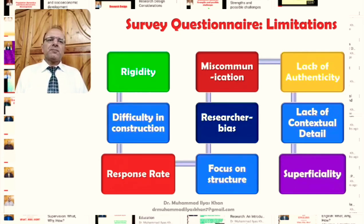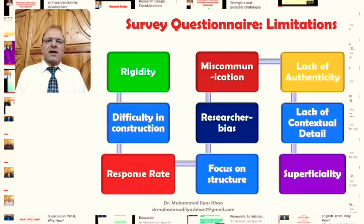Researcher bias is another limitation because the researcher is asking what they want to explore in the way they want to explore it. The choice that respondents have is limited — they generally have to respond in terms of the items provided, especially in closed-ended or scale-based items, where they must respond using answers the researcher has already provided. This limits the freedom of choice for respondents.